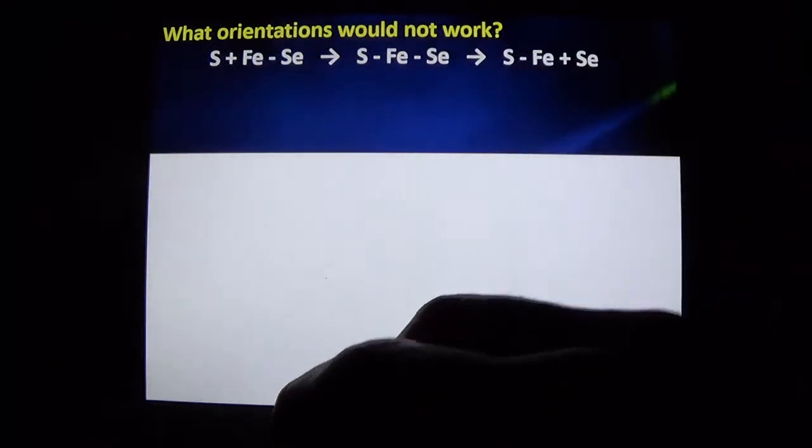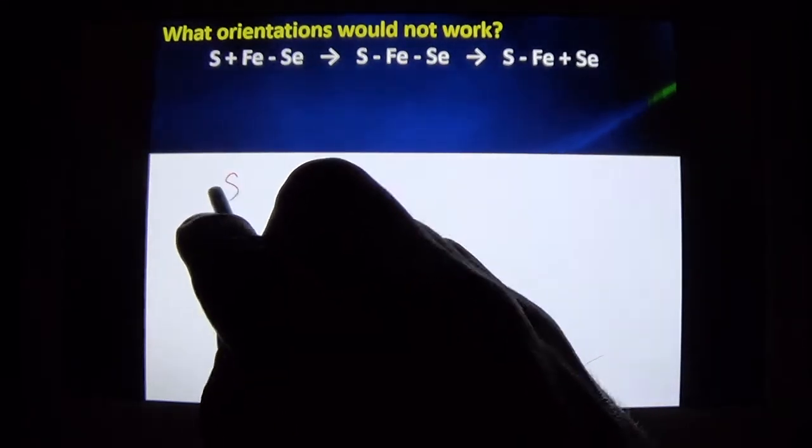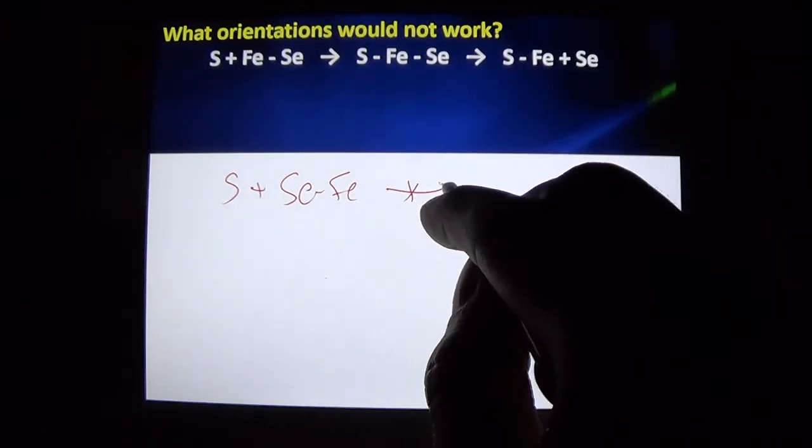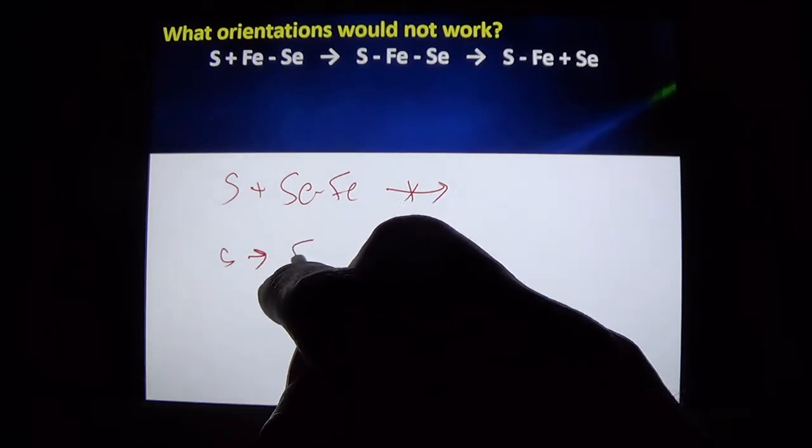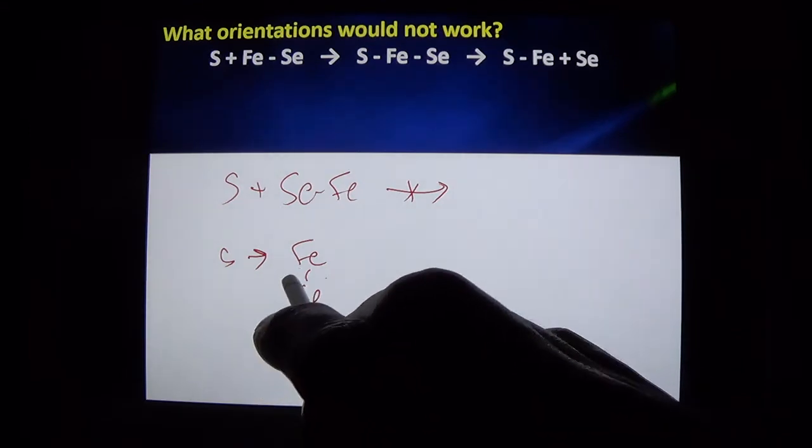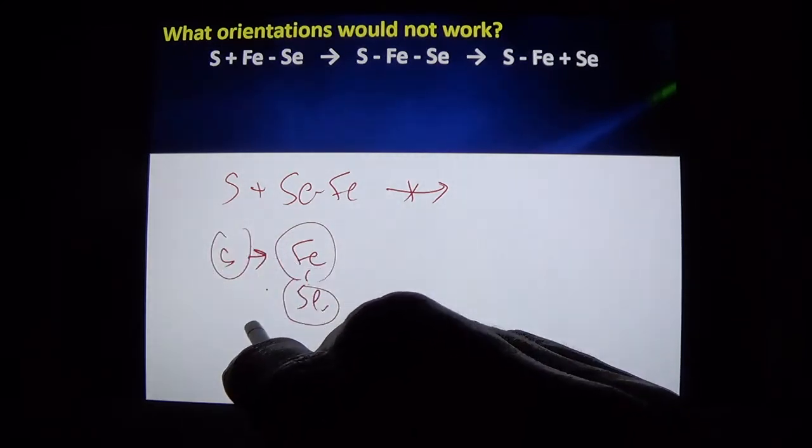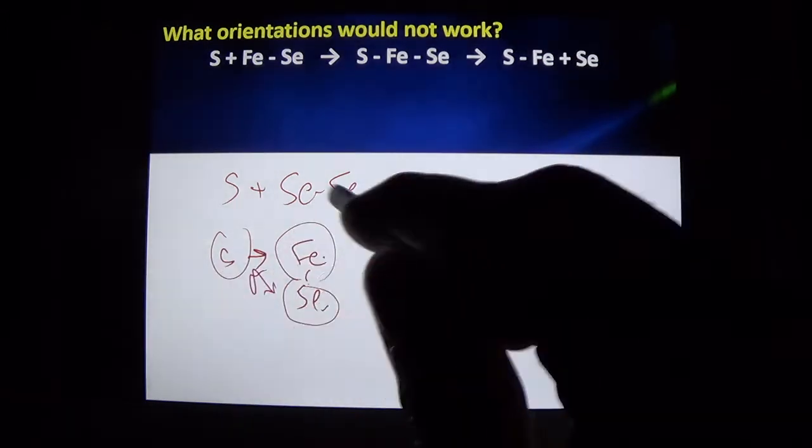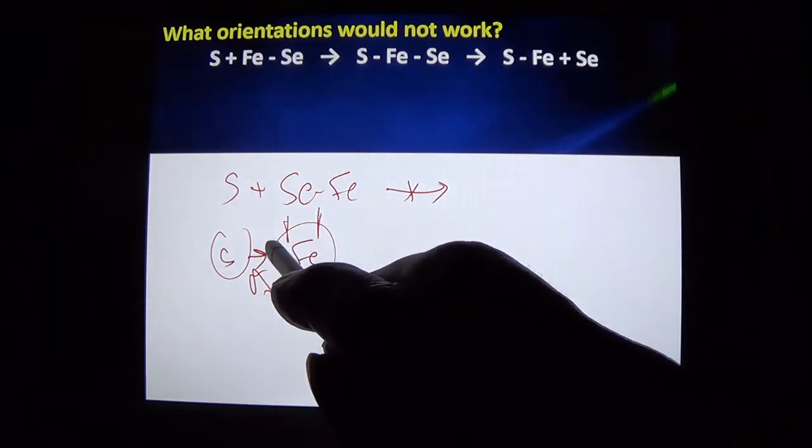What orientations would not work? We know the sulfur has to hit the iron, so if the sulfur came in and hit the selenium side, we know that would not work. What if sulfur was aiming at iron but at the side? We have to consider the amount of space these atoms would take up. Does sulfur have enough room to come in at the side, or would it be repelled by the selenium? There's probably a sweet spot where if it hit the iron there, it would react if it has enough energy.